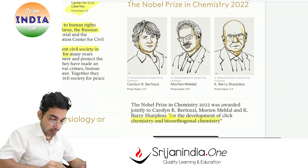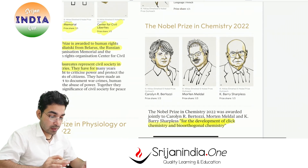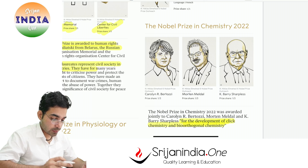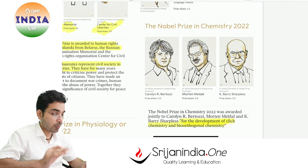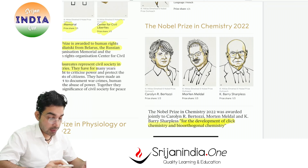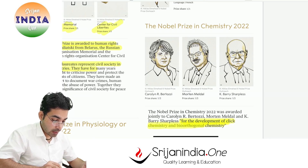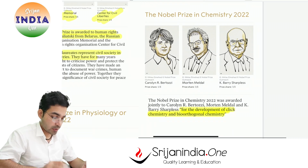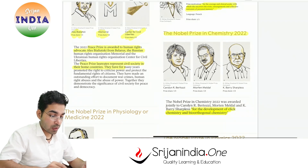Nobel Prize in Chemistry was awarded for click chemistry and bio-orthogonal chemistry. Click chemistry is about synthesizing new compounds — for example, creating medicines that hit only the tumor site, new enzymes, and new molecular components. The scientists worked on the mechanism of building new compounds using this approach. Just remember the keywords: click chemistry and bio-orthogonal chemistry.